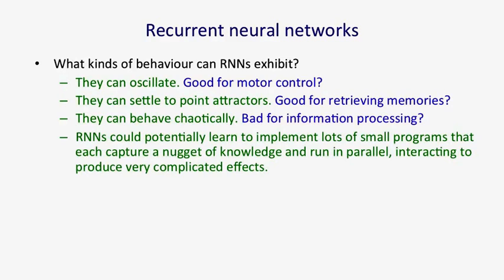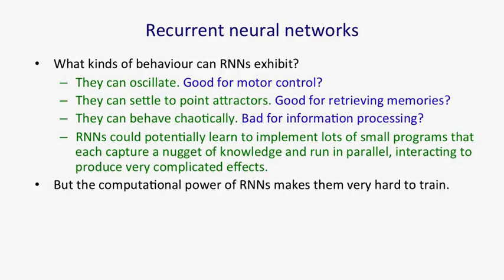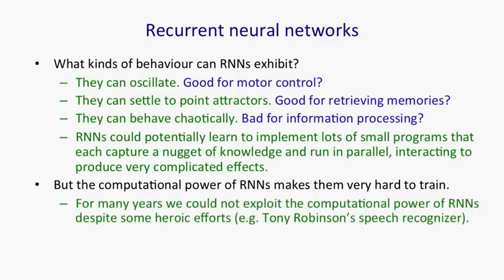One nice thing about RNNs, which a long time ago I thought was going to make them very powerful, is that an RNN could learn to implement lots of little programs using different subsets of its hidden state, and each of these little programs could capture a nugget of knowledge, and all of these things could run in parallel and interact with each other in complicated ways. Unfortunately, the computational power of recurrent neural networks makes them very hard to train. For many years, we couldn't exploit the computational power of recurrent neural networks. There were some heroic efforts. For example, Tony Robinson managed to make quite a good speech recognizer using recurrent nets. He had to do a lot of work implementing them on a parallel computer built out of transputers, and it was only recently that people managed to produce recurrent neural networks that outperformed Tony Robinson's ones.